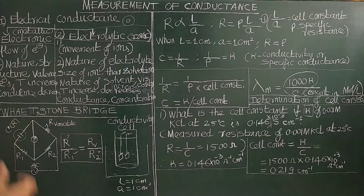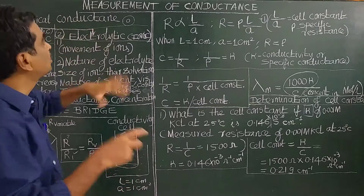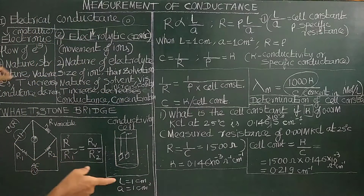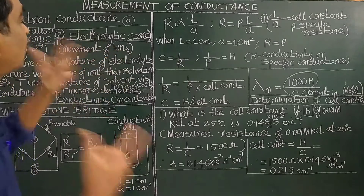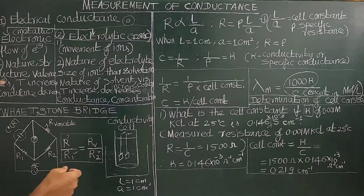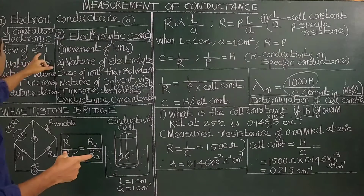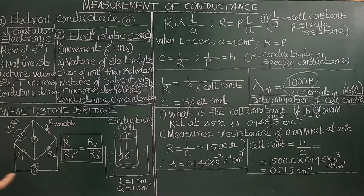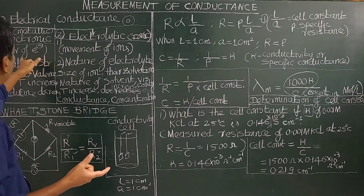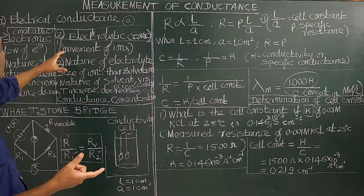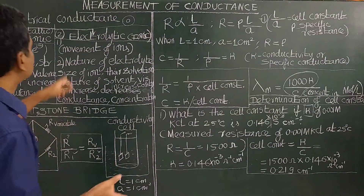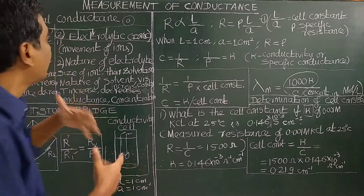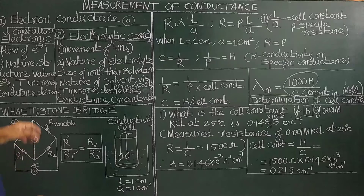Before we see how it is measured, there are two types of electrical conductance. One is electronic conductance or metallic conductance. Another is electrolytic conductance or ionic conductance. In metallic conduction, it is due to the flow and movement of electrons through the metal. Whereas in electrolytic conductance or ionic conductance, it is due to the movement of ions present in the electrolytic solution.